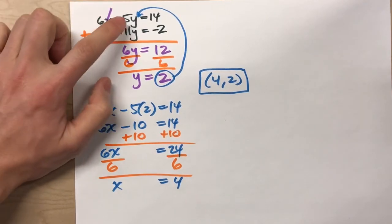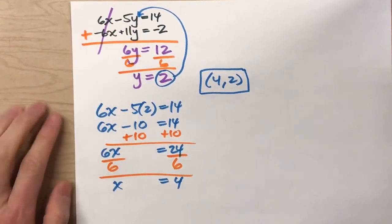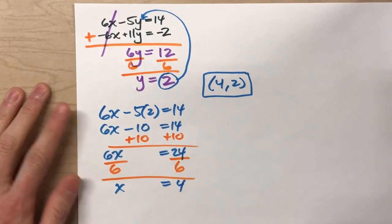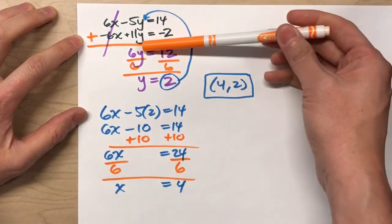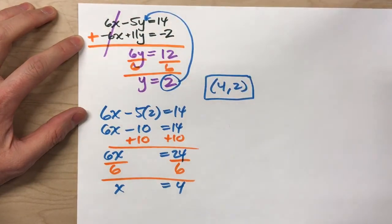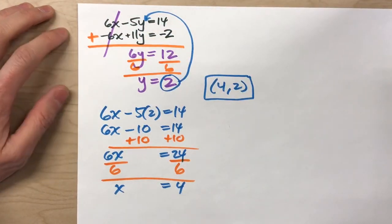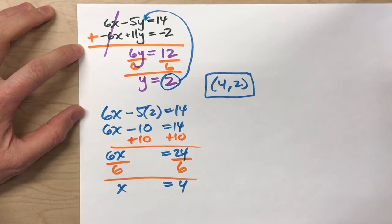It would also work, though, if you had the same number of y's, but one was positive and negative. This method is called the elimination method because when you add the two equations together, it eliminates all of one variable, and then you can easily solve for the remaining one.